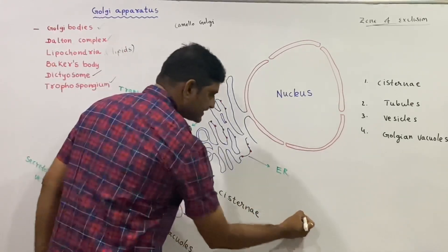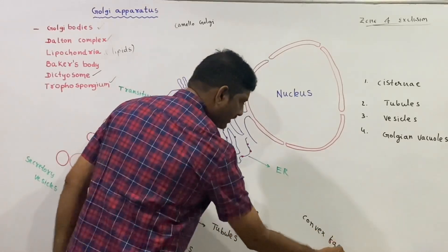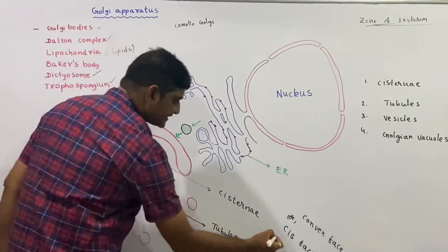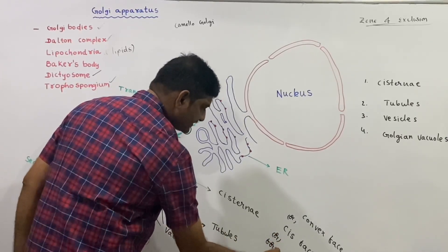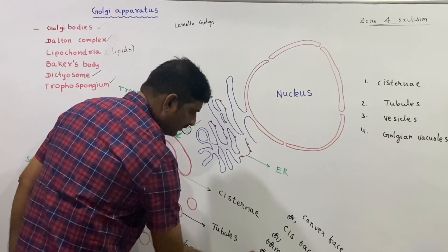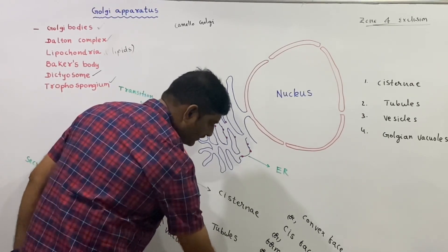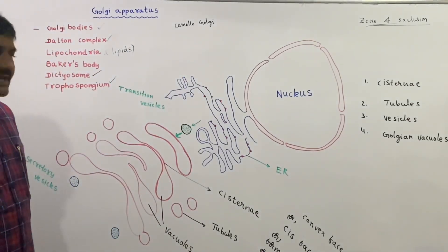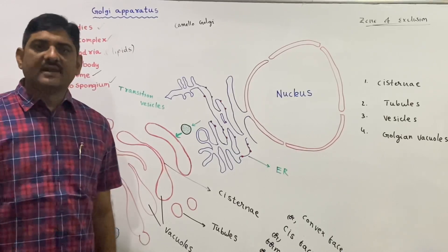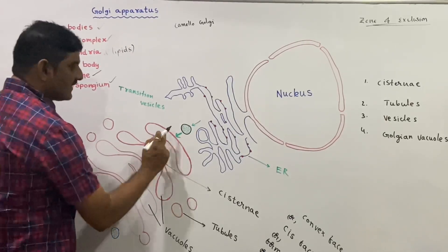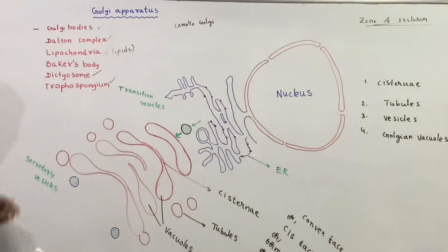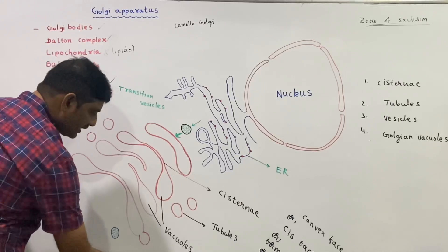The Golgi apparatus shows polarity. The convex face is known as the cis face, also called the forming face, formative face, or proximal face. The cis or convex face means the forming or proximal face. The opposite side is the concave face.